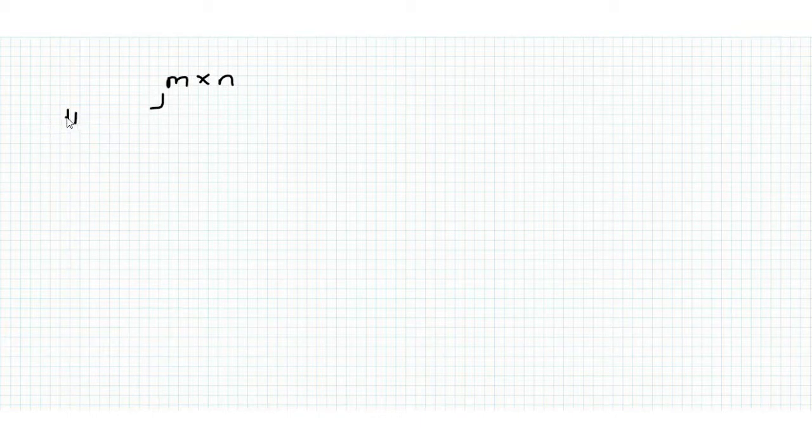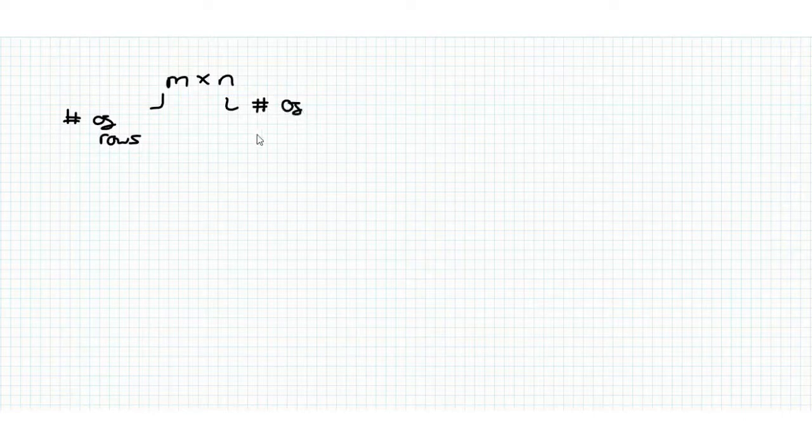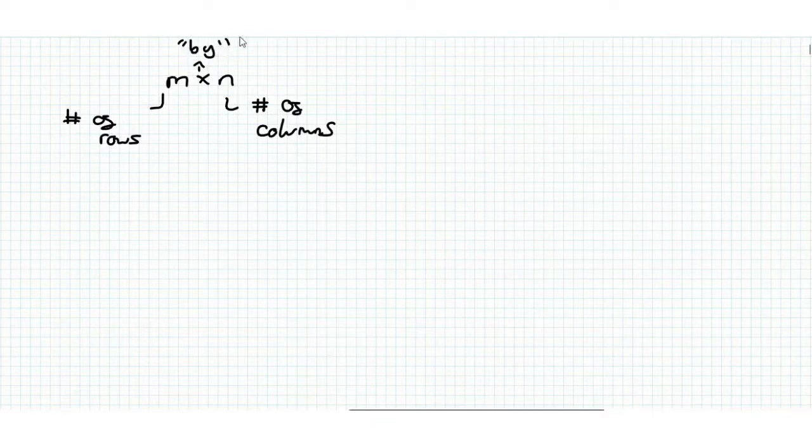First thing we'll look at is the size of a matrix. We write the size as an M by N matrix, where M is the number of rows and N is the number of columns. So M and N are the dimensions of the matrix, and M by N is the size of the matrix.